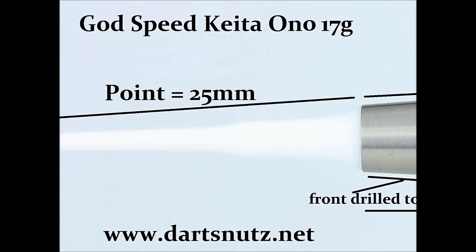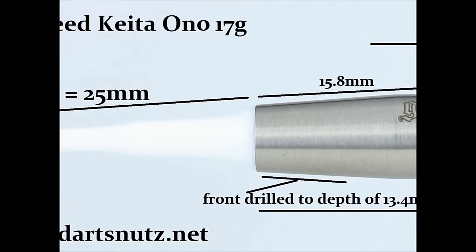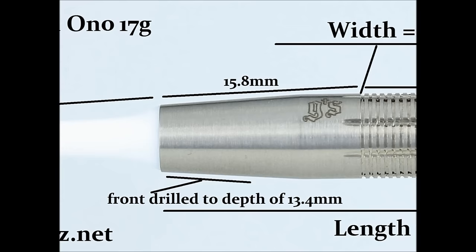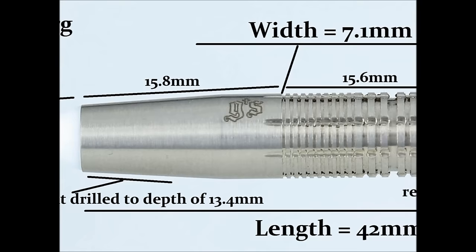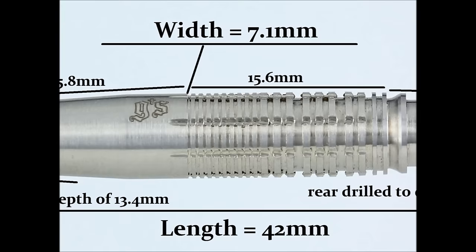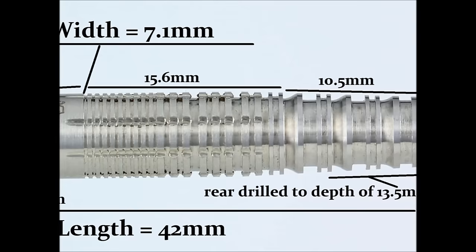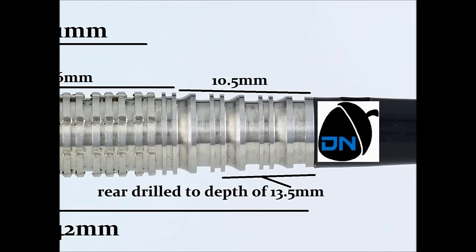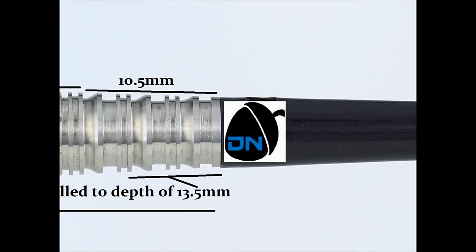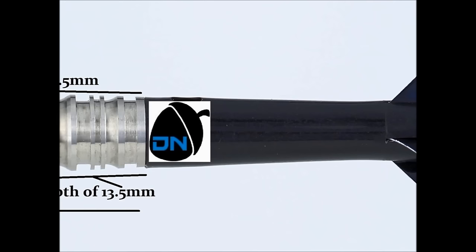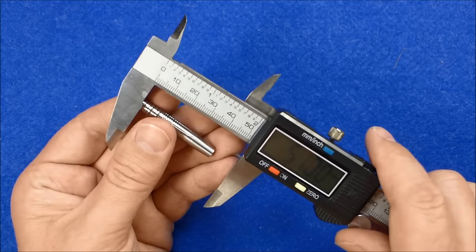Right then here's the close look at the Keita Orno 17g soft tip darts. It's got a 25mm soft tip point. The front section of the barrel is mostly smooth apart from the few little notches near where the lateral cuts are. That's 15.8mm wide. And then it starts off with a kind of a thin ring grip and it gradually gets into slightly bigger rings and wider grooves. That's 15.6mm wide before it gets into a combination grip of a kind of like a shark curved ring grip with pretty wide grooves in between and double ring grips. That goes right to the end of the barrel which is about 10.5mm wide. The overall length is 42mm and the width is 7.1mm.